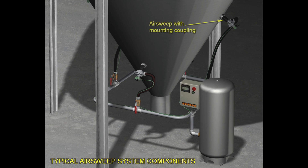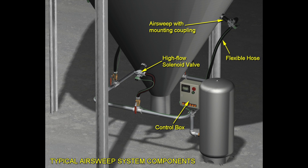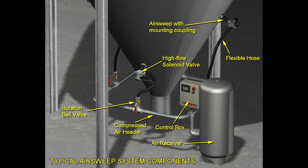Typical components of the air sweep system include the air sweep nozzles and high flow solenoid valves, a sequence controller, flexible hose connections, isolation valves, compressed air header piping, and an air reservoir tank. Other air prep components including a regulator and point of use filtration may also be necessary depending upon the existing compressed air system and the process.